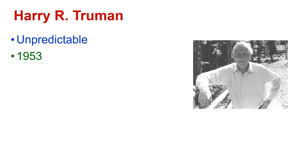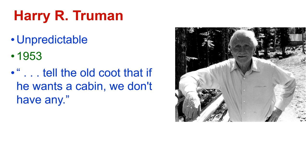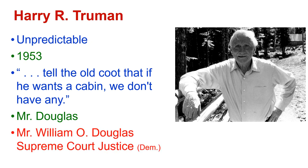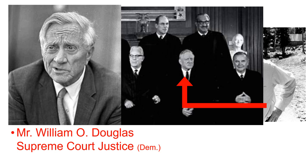Harry Truman was very unpredictable. In 1953, a man came to the lodge. Harry Truman looked out the window and said, 'Tell the old coot that if he wants a cabin, we don't have any.' His friends started to laugh because they said, 'Don't you know who that man is? That man is Mr. William O. Douglas, the Supreme Court Justice.' He was a Democrat. Well, Harry Truman ran after him once he found out who he was, told him to come on back, had a room for him, and they remained friends.